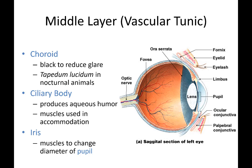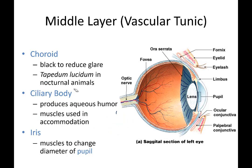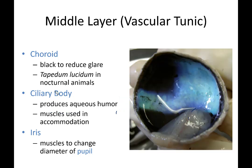In the middle layer, the choroid is a dark black layer right under the sclera around the posterior part of the eye. The ciliary body is located right behind the lens. It is muscle used in accommodation — another word for focusing the lens. The ciliary body also produces aqueous humor, creating fluid that fills the anterior portion of the eye. The choroid is normally black in humans.